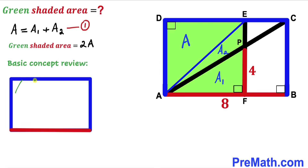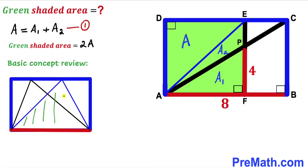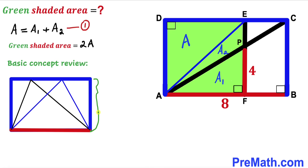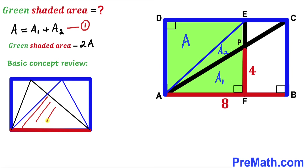Before we proceed, let me go over a basic review focusing on the blue rectangle. When two triangles share the same base and have the same height, their areas are equal. Furthermore, if a region is common to both triangles, we can conclude that the remaining portions also have equal area. We are going to apply this same concept to our problem.